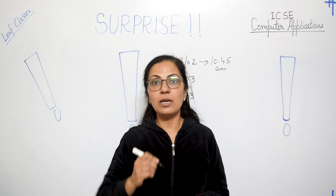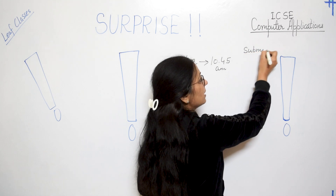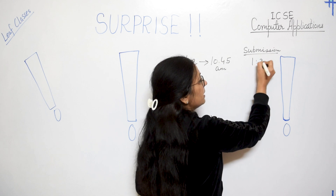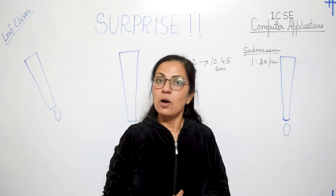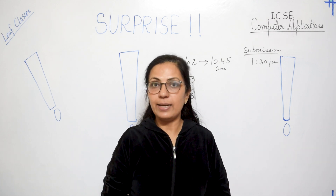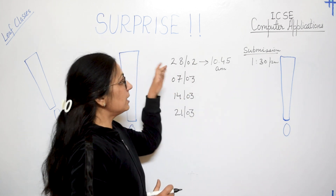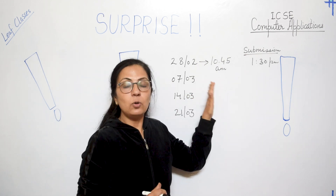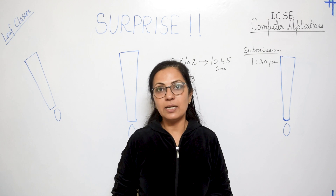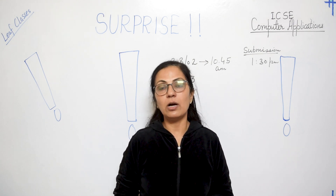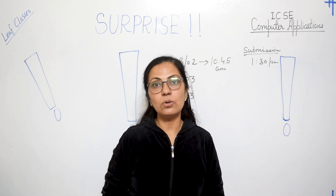You will be writing the paper solution in your practice notebook or on sheets, and you can start submission at 1:30 p.m. The first 36 valid entries for each paper will be accepted; once we receive the first 36 valid entries, we will stop the submission. In each video released on Sundays at 10:45, you will get the link in the description box for how and where to submit. You must submit your name and your email ID, and you will get the Zoom session link, timing, and other details through your email ID.